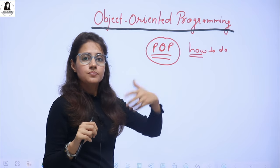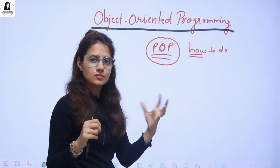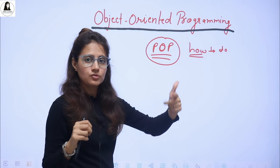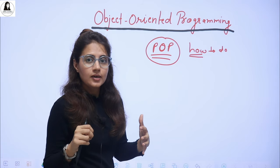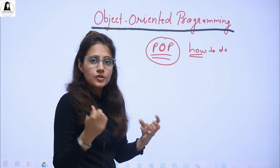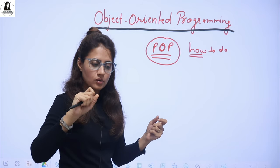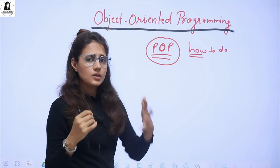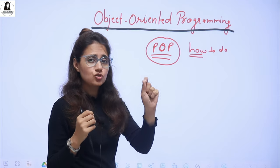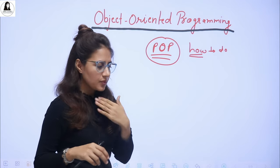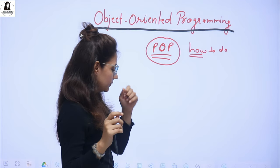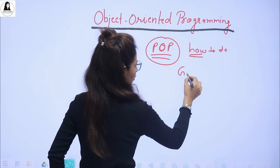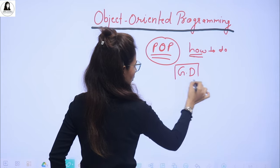Now the data — data is declared separately. We have some global data as well as some local data which is local to each function. And how these functions call or are called by passing arguments — the data is passed using arguments. So if you visualize this: we have global data, GD is global data, and suppose we have three functions.